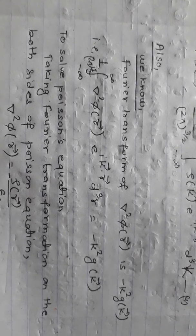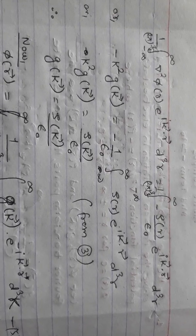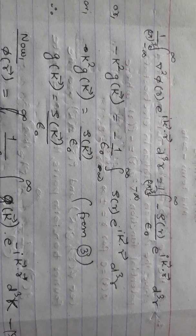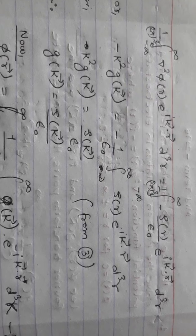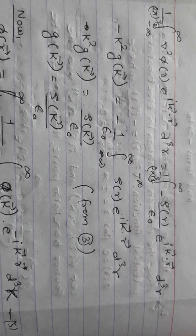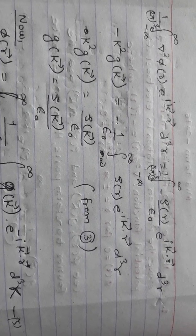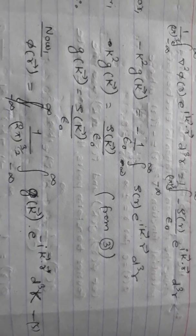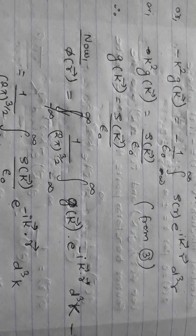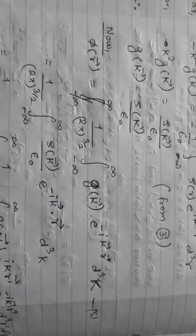Now I take the Fourier transform on both sides of the given equation. Using the result for the Laplacian and the 1 over epsilon naught factor taken outside the integral, I find a relation: G(k) in terms of rho(k). This gives us G(k) equals negative rho(k) over (epsilon naught times k squared).